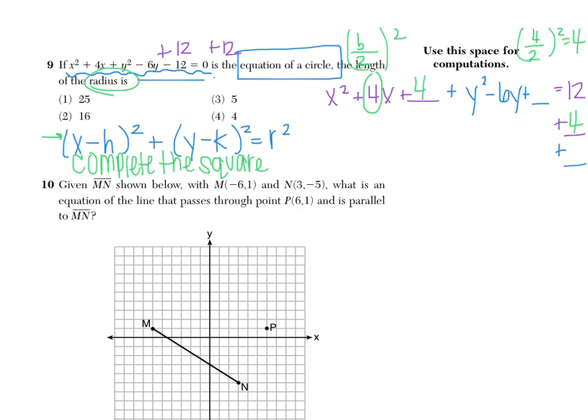Whatever you do to one side, you must do to the other. Then I'm going to do something similar for the Y's. Take the B value, negative 6, divide it by 2, and square, which gives me 9. You should always be adding a positive value to both sides, because whether you're squaring a positive or a negative, the answer is always positive.